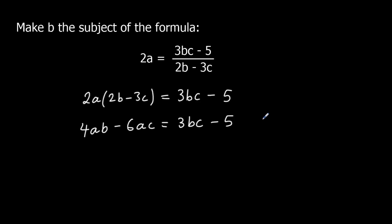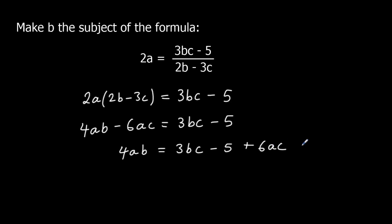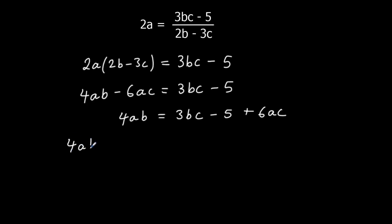I want to get 'b' by itself, so I'm going to get the b terms on one side and everything else on the other side. If I add 6ac to both sides: 4ab equals 3bc minus 5 plus 6ac. Then take 3bc away from both sides: 4ab minus 3bc equals 6ac minus 5. I'm writing it that way around so there's no negative on the front — it just looks neater.